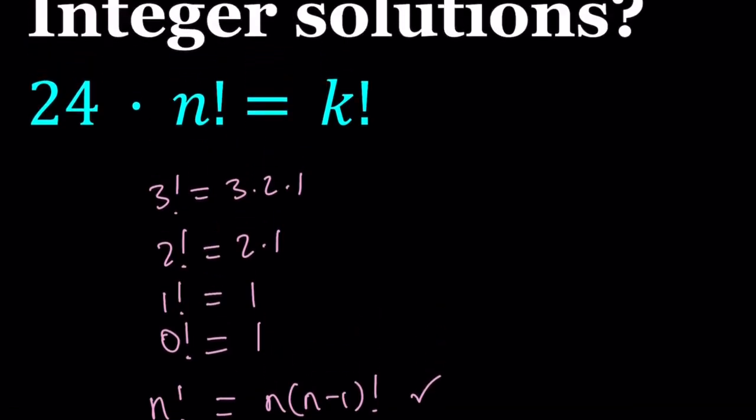So we have this interesting equation: 24 times n factorial equals k factorial, where k and n are positive or non-negative integers. We're not looking for fractions. Even though the graph I'm going to show you at the end will include all real values for n and k, which I replace with x and y.